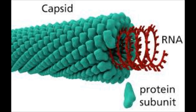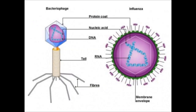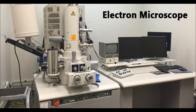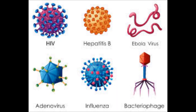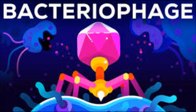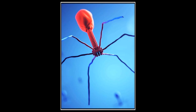They do not have locomotory organs, as they move through the bloodstream in animals and through the phloem sap in plants. They are very minute, which cannot be seen through a light microscope; rather they can be seen through an electron microscope. Viruses do not have their own enzyme system, as they capture the enzymatic machinery of the host cell. They can only multiply in a living host cell.